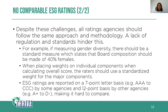For example, when measuring gender diversity, there should be a standard measure stating that board composition should be at least 40% female. When placing weights on individual components and calculating overall scores, raters should use standardized weights for major components — currently, different companies give larger weights to environmental factors versus governance factors, making results incomparable. This is not going to be understood by ESG investors who are largely the general public. Furthermore, ESG ratings are reported on a seven-point letter basis by some agencies and a 12-point basis by others, ranging from A-minus to D-minus, making comparison very hard.